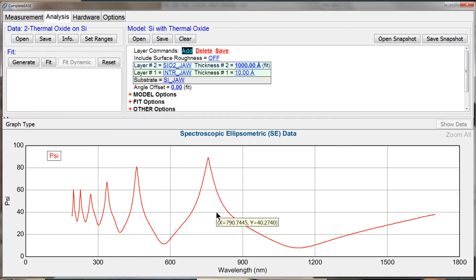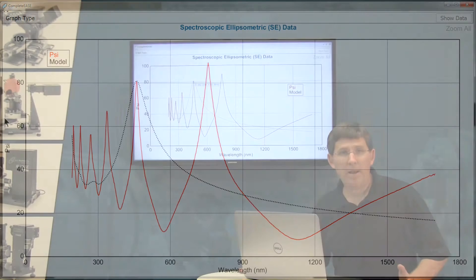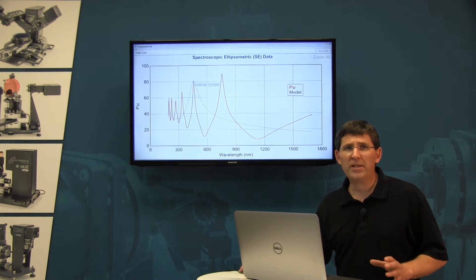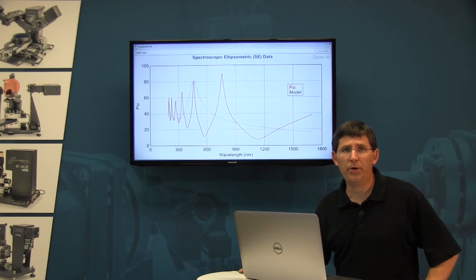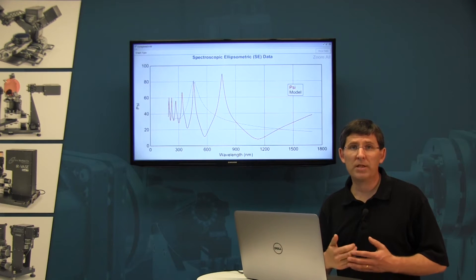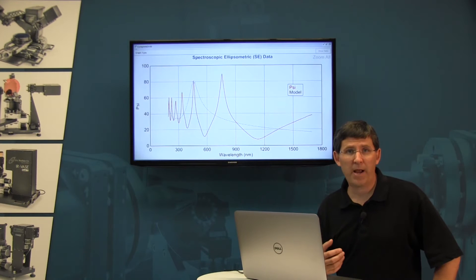Now again it has a thousand angstroms as my starting thickness, but when I generate I notice that that thickness is wrong. And I know that because in order for the thickness to be correct it has to reproduce the shape of my data, which means it has to have the same numbers of peaks and valleys as my experimental data.